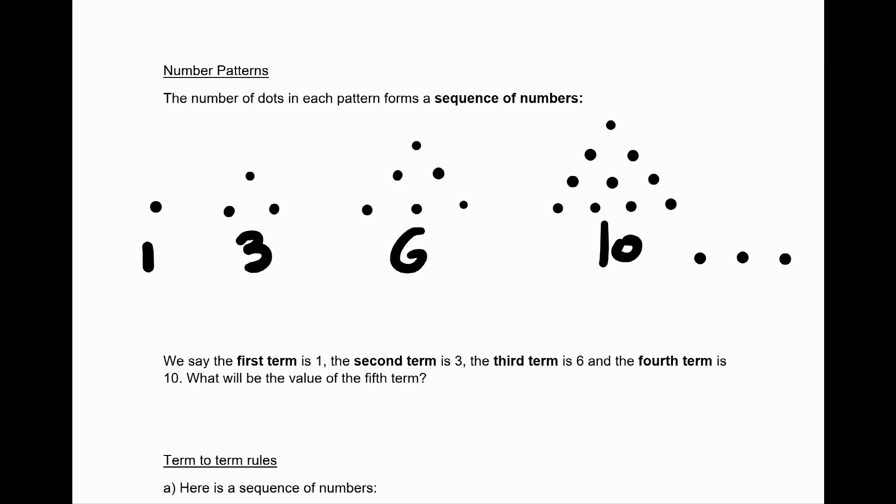We need to carry on the number pattern. In the first term there's just 1 dot, in the second term there are 2 dots forming the bottom layer of what we could call a triangle, and there's another dot making up the top of the triangle. There are 3 dots on the base of the triangle in the third term, 4 dots on the base in the fourth term. So the fifth term will have 5 dots at the base. We could draw a picture of this.